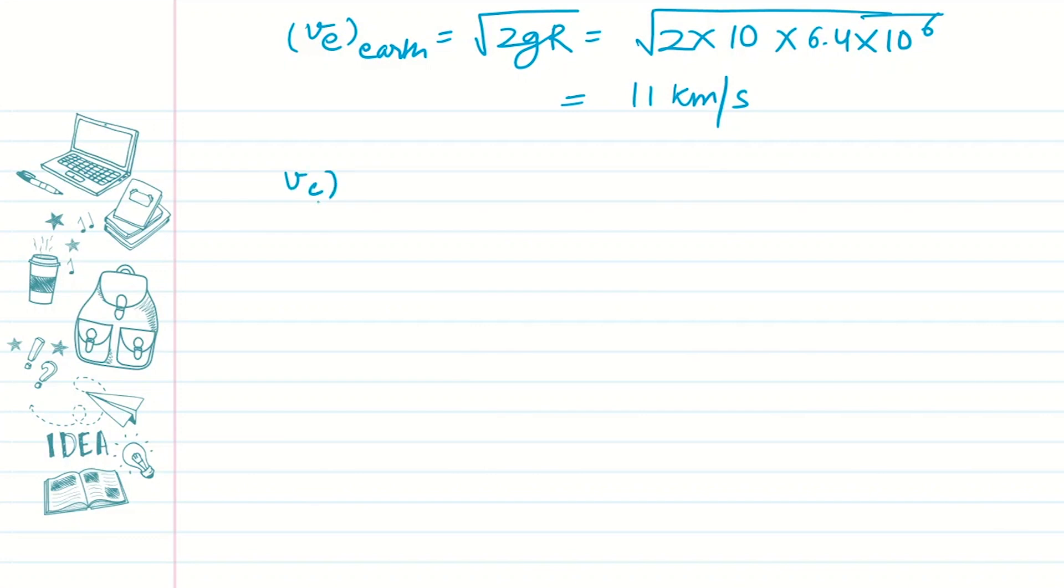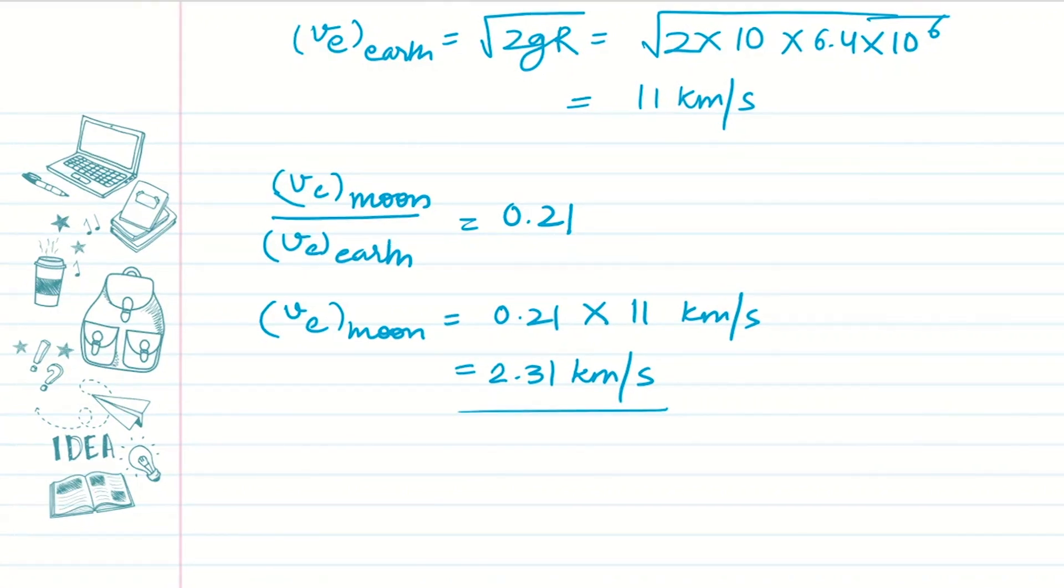And we know the ratio of escape velocity for Moon over Earth. So this is 0.21. So we just have to multiply this 0.21 with escape velocity that is 11 km per second. So this comes out to be equal to 2.31 km per second. This is the escape velocity for Moon.